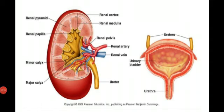Each kidney is about 10 centimeters long, 5 centimeters wide, and 4 centimeters thick. The weight of both kidneys is less than 1% of the total body weight; however, they receive 20% of the blood supplied to the body with each heartbeat. This is all about the structure of the human kidney. Thank you.